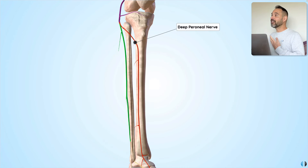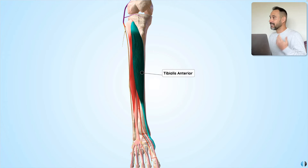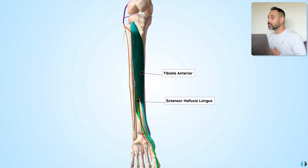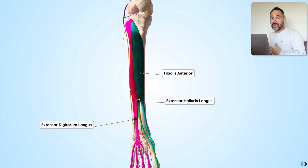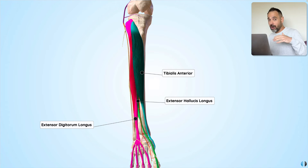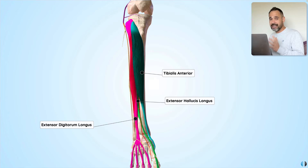Looking at the deep peroneal nerve in more detail, it innervates muscles like tibialis anterior, extensor hallucis longus, and extensor digitorum longus — all dorsiflexors of the foot. So when your patient comes in with back pain and pain running down the leg with a foot drop, now you know why: the sciatic nerve supplies the deep peroneal nerve, and when that nerve is dysfunctional, your patient will have a foot drop. That is a really important sign to look out for when your patient has sciatica.